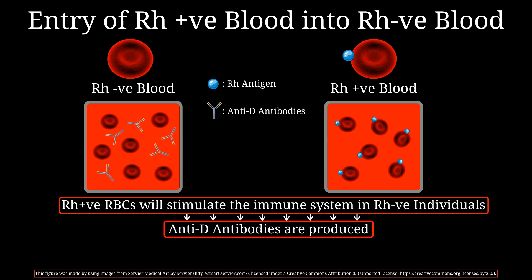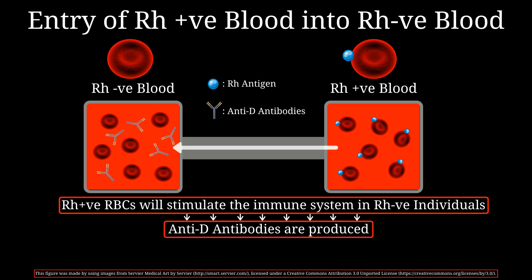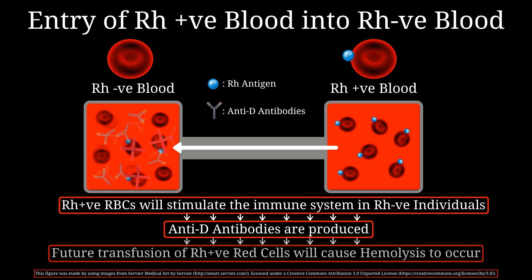Once these antibodies are produced, they will stay present in the circulation throughout the rest of their lives. And if in the future they're exposed to RH positive blood again, the anti-D antibodies will attack all the RH positive red cells, eventually leading to hemolysis.